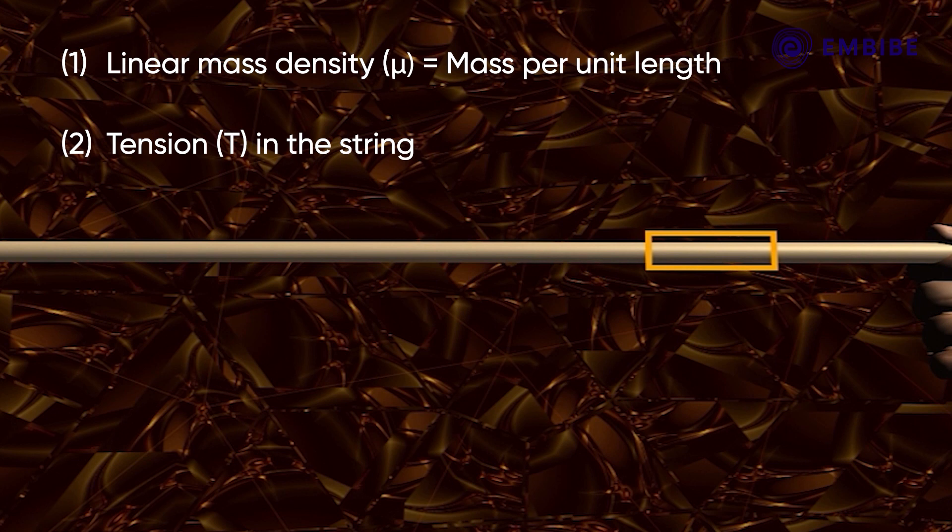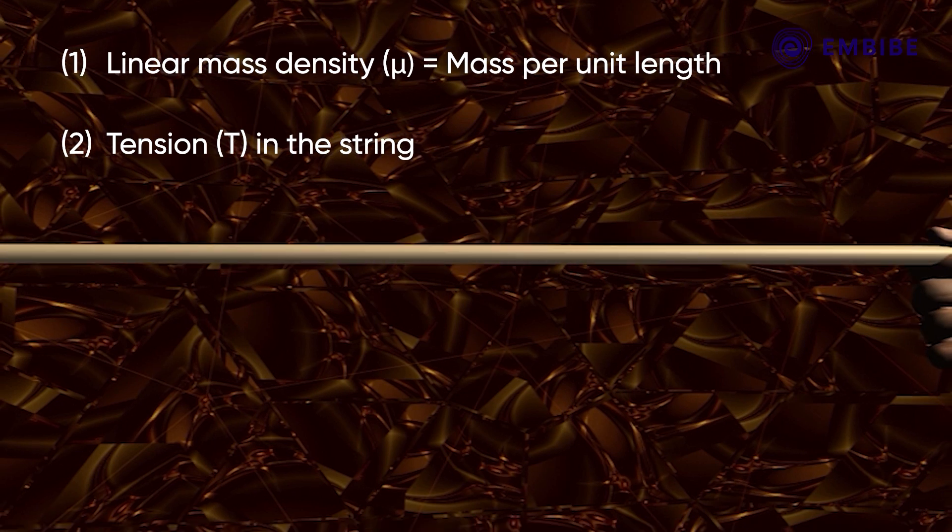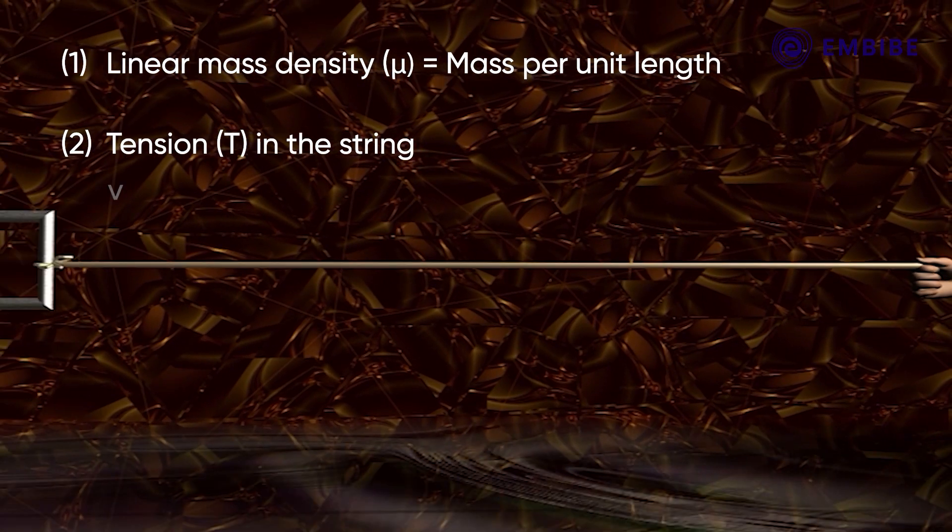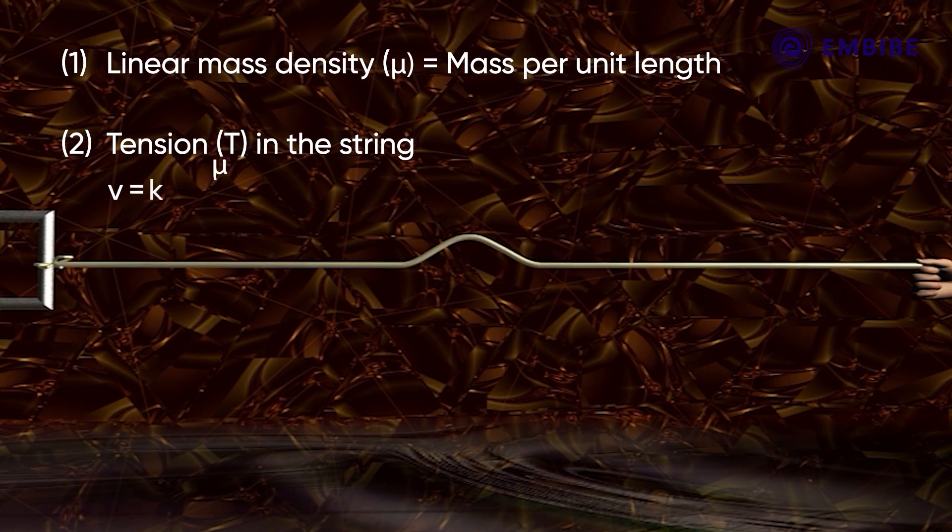Wave speed v is equal to k times μ raised to the power of a times T raised to the power of b.